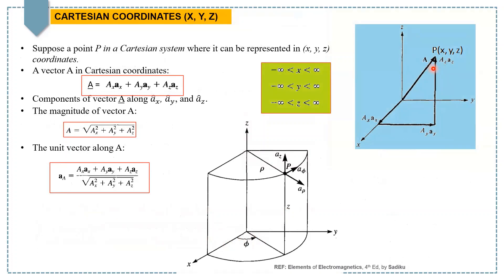A Cartesian coordinate system is a system in which the location of a point P is given by coordinates, and those coordinates represent its distances from perpendicular lines that intersect at a point called the origin.